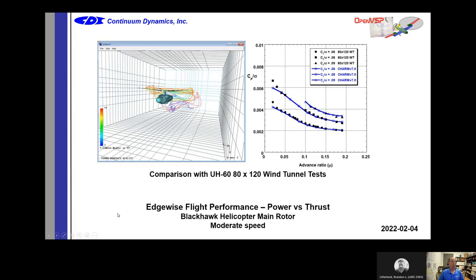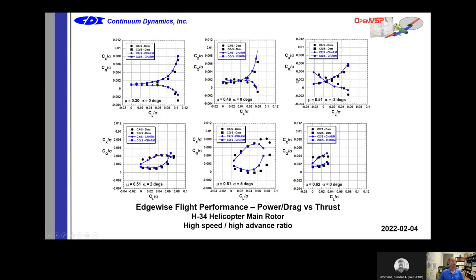Some more plots showing forward flight: edgewise flight performance, power versus thrust. For eVTOL lift-plus-cruise configurations, you're going to be stopping the rotor, which can get you to very high advance ratio — even infinite advance ratio if you stop the rotor completely. Typical helicopters only go up to about 0.3 advance ratio. We've done work with CHARM at advance ratios of 0.3, 0.46, 0.5, 0.51, and 0.62, so even at high advance ratios you can use CHARM to get your performance.